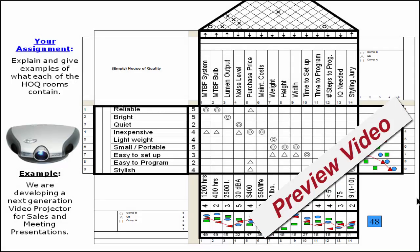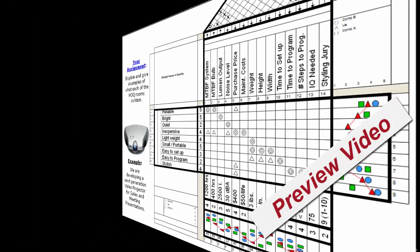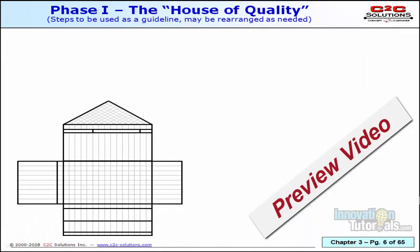But before we do that, I want to show you a flowchart on navigating through the House of Quality. This is the first of two flowcharts I want to show you. This one shows a very logical, sequential, step-by-step process indicating the order of the rooms to populate in the House of Quality.